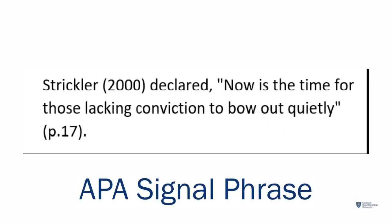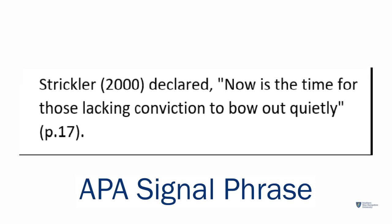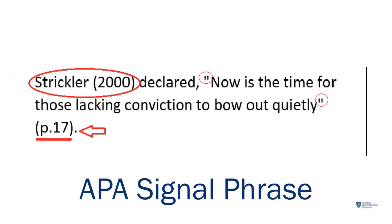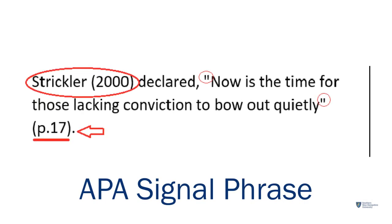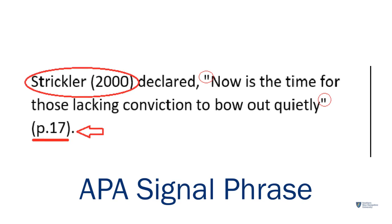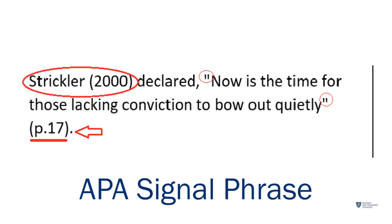Let's examine an APA style signal phrase: Strickler declared, "Now is the time for those lacking conviction to bow out quietly." To create the signal phrase, the writer has put the author and year of publication together, used quotation marks to identify the exact words of the author, included a page number in the parentheses immediately following the quote, and placed the period after the parentheses.